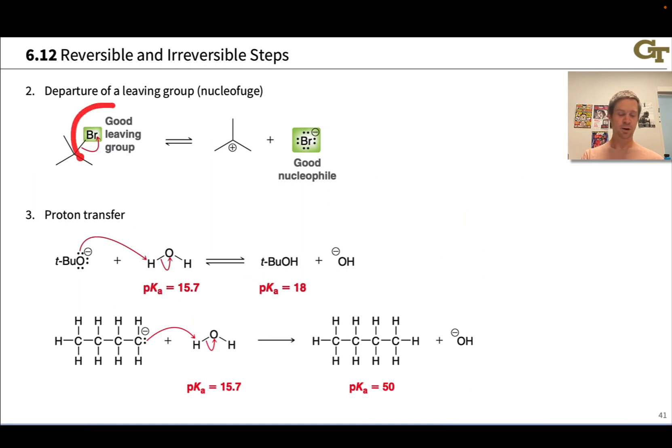On the other hand, bromide is a good leaving group. This means that the forward reaction also occurs to an appreciable degree. So here again, we have a situation where the forward and reverse reactions are both occurring at non-negligible rates, and so this is a reversible elementary step and likely favors the neutral reactant over the charged products. In mechanisms where this step occurs, the carbocation will go on and do something ultimately irreversible to drive the reaction to products.